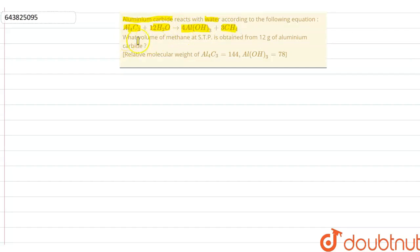Here we have to tell what volume of methane at STP is obtained from 12 gram of aluminium carbide, given relative molecular weight of aluminium carbide is 144 and Al(OH)3, that is aluminium hydroxide, is 78.